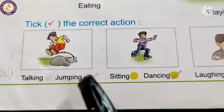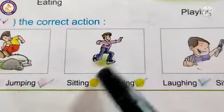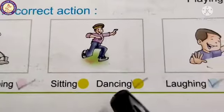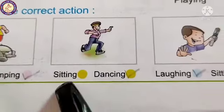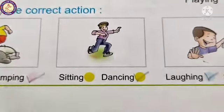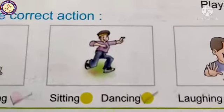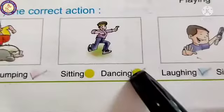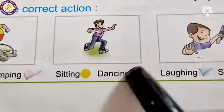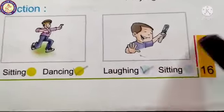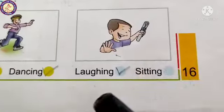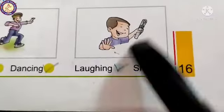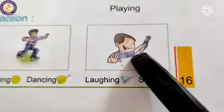क्योंकि यहाँ पर jumping हो रही है। Next, यहाँ पर आपने देखा — dancing पर tick लगा दिए। यह कौन सी action है? Laughing और sitting में से — laughing means हँसना। यहाँ पर हँसने वाली action हो रही है।